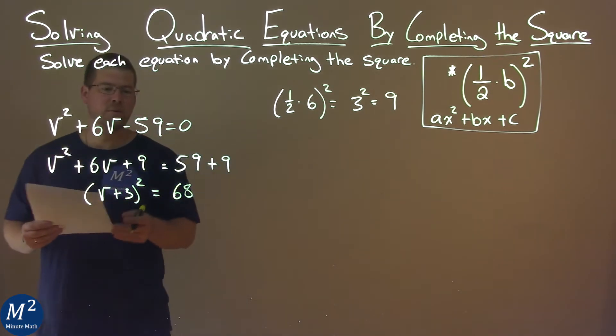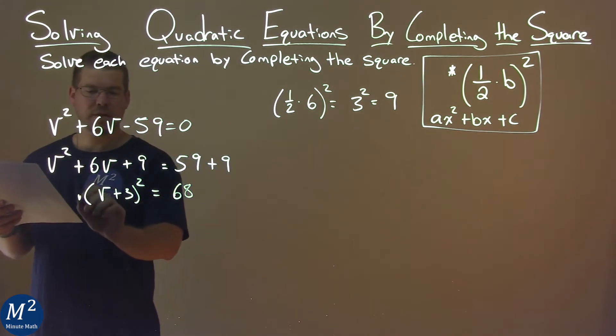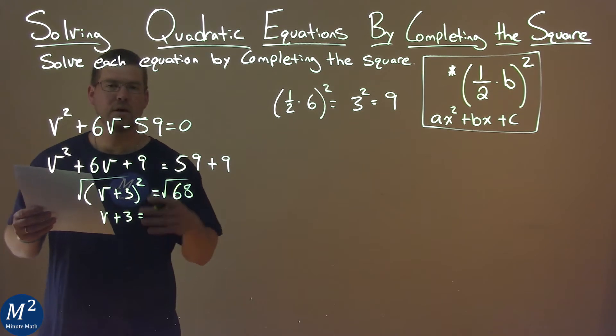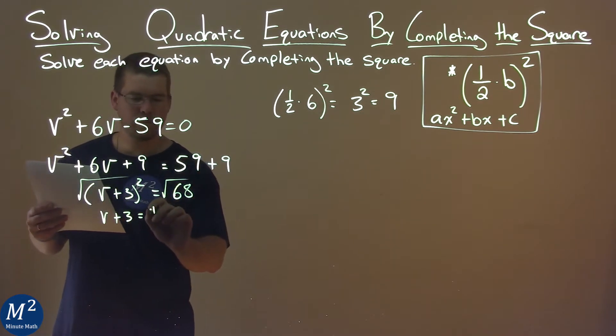From here, we want to solve for v. We take the square root of both sides, and we have v + 3 equals plus or minus the square root of 68.